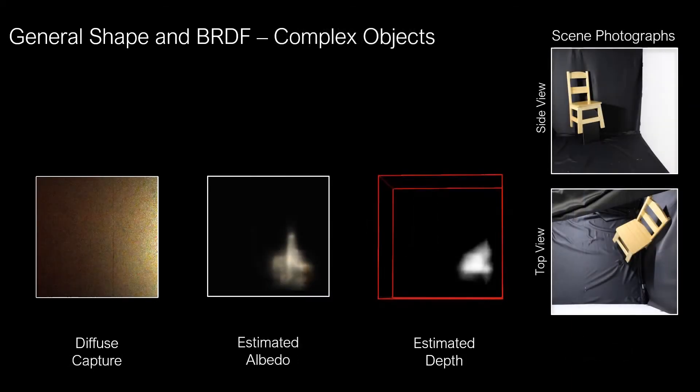For the smaller, more complex objects, we only recover rough shape with the chair's sitting area visible in the estimated depth map.